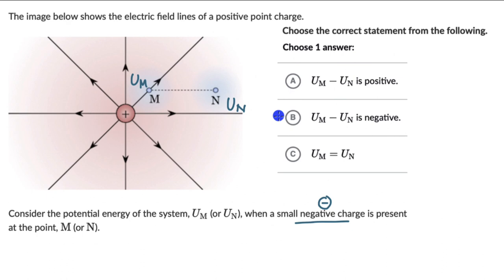The negative charge will move towards the positive charge because of the electrostatic force of attraction — opposite charges attract. The positive charge has an electric field that radiates outwards, and because the negative charge is present in that electric field, it experiences a force in the opposite direction to the field — that is, towards the positive charge.